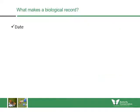A biological record at its basis requires three main things: the date, the approximate or exact location, and the name of the species.